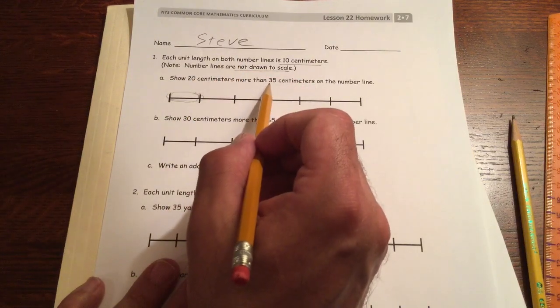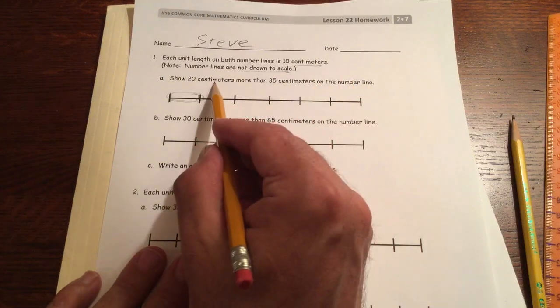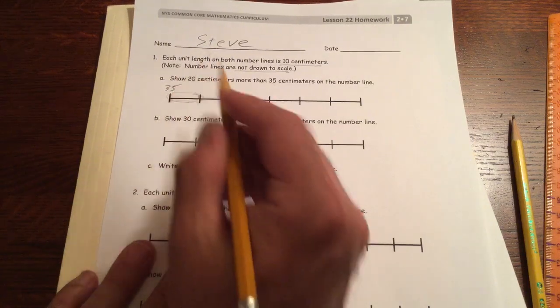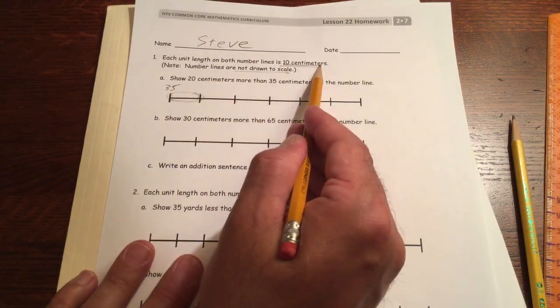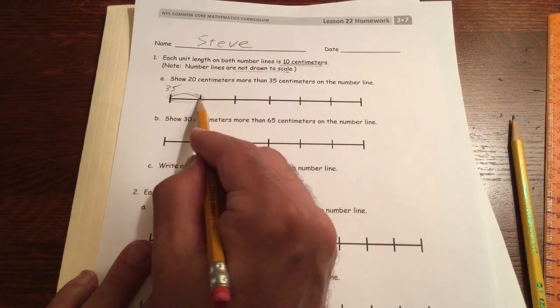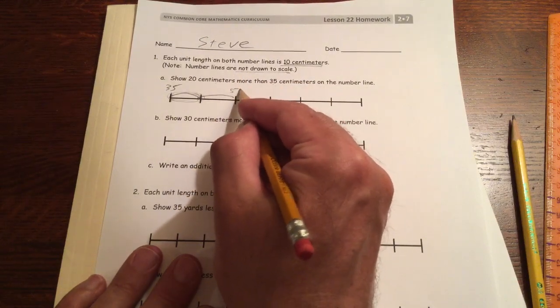Show 20 centimeters more than 35 centimeters on the number line. We want 20 more than 35, so let's start at 35, and we want 20 more. We're counting by tens, so we want 20 more. 10, 20. That's 55.